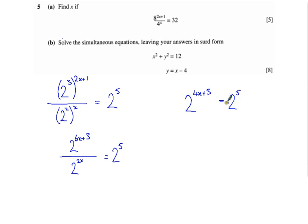So that's 2 to the power of 4x plus 3 equals 2 to the power of 5. And if the base numbers are the same and these two things are equal, then the indices must be the same. So 4x plus 3 equals 5, so 4x equals 2, and x equals a half.